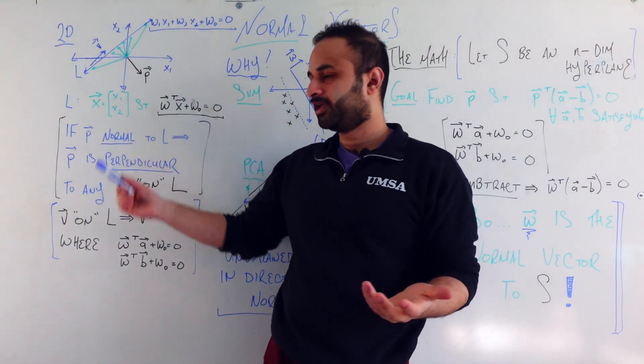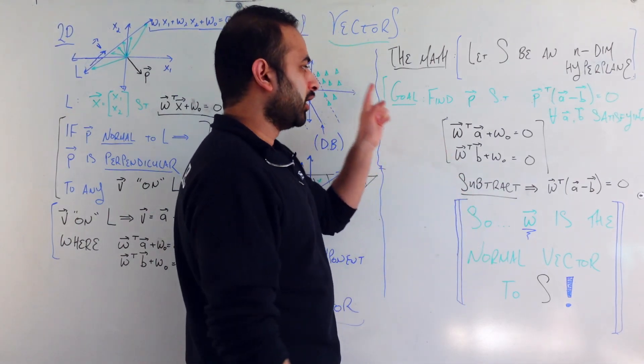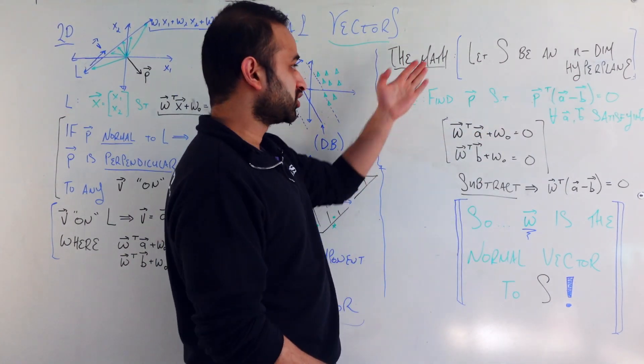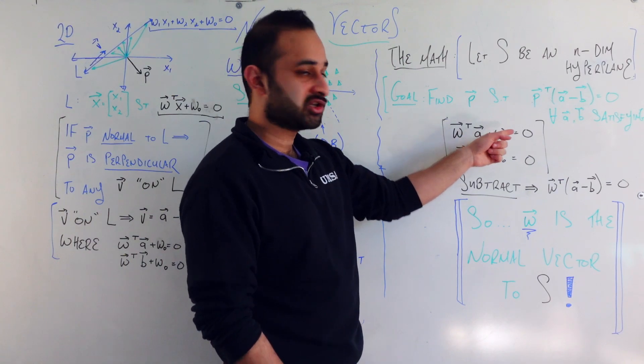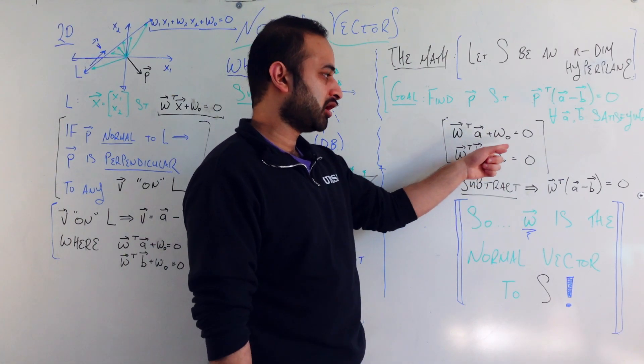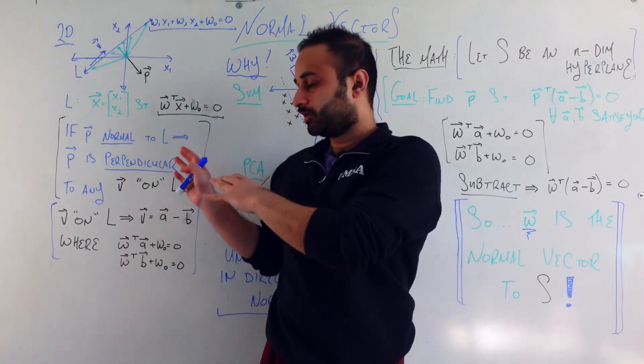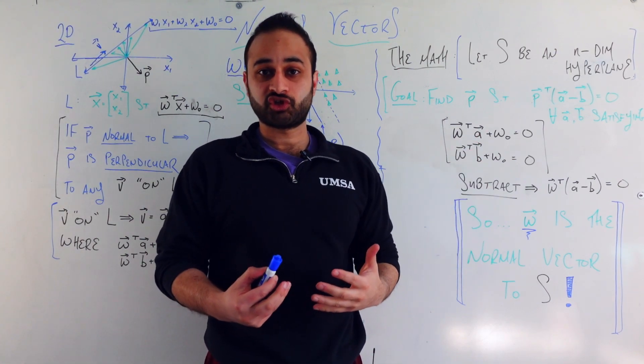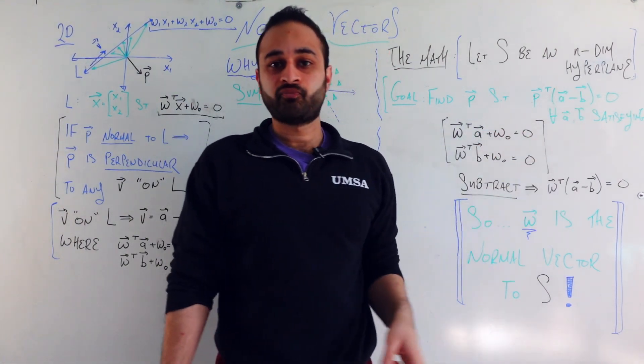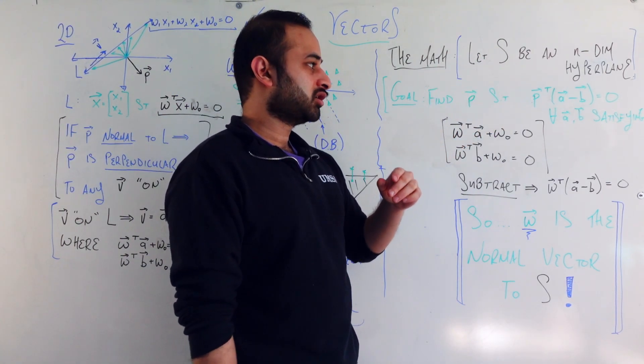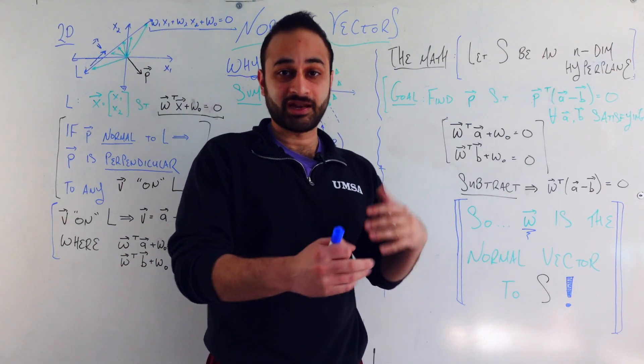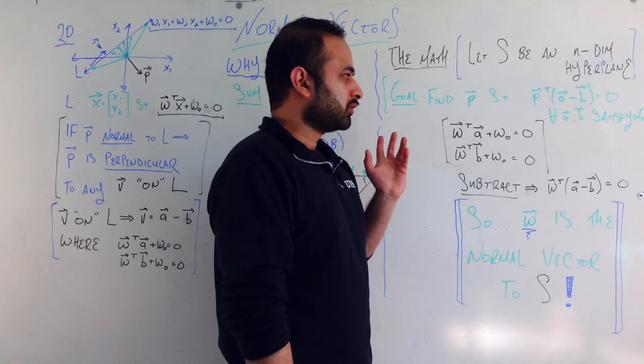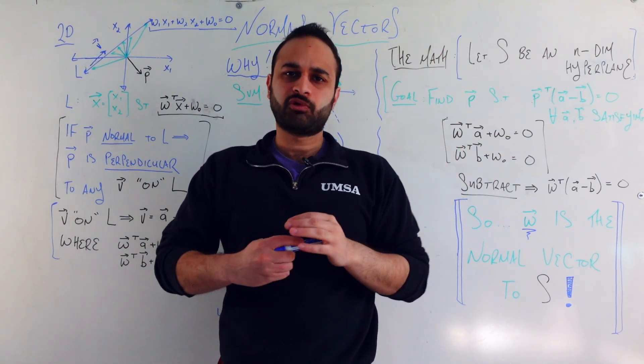So the goal is to find some vector P. By the way, I'm just choosing to call this normal vector P for perpendicular, but you can call it whatever you want. We're going to need to find some P such that for every A and B who satisfy this definition of S, so W transpose A plus W naught is equal to 0, and W transpose B plus W naught is equal to 0. So thinking back to here, that's exactly the definition of the hyperplane itself. So if we can find two vectors that satisfy that definition, and we take their difference, A minus B, then we need for P, this normal vector, to always have dot product of 0 with that difference. That's the same discussion we just had in the beginning of the video. So that's all good. So how do we use all this knowledge to actually find what P should be?